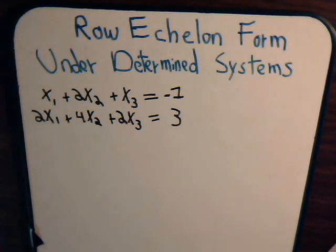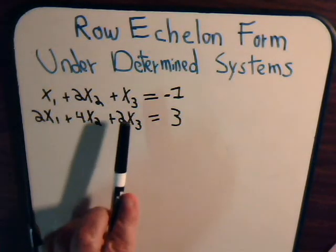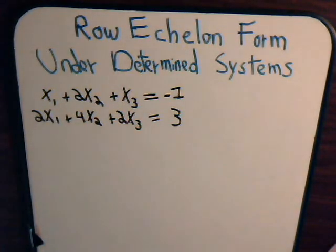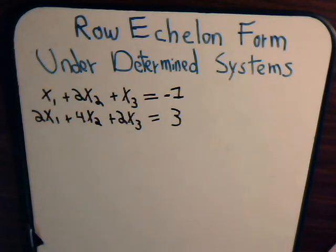In this video we're going to examine the consequences of when we use the Gaussian elimination method or the row echelon form technique with underdetermined systems. Underdetermined systems are situations where there are more variables than there are equations. Here we have three different variables to solve for — x1, x2, and x3 — and only two different equations. Can you even get a valid answer? Let's check this out by setting up the augmented matrix.